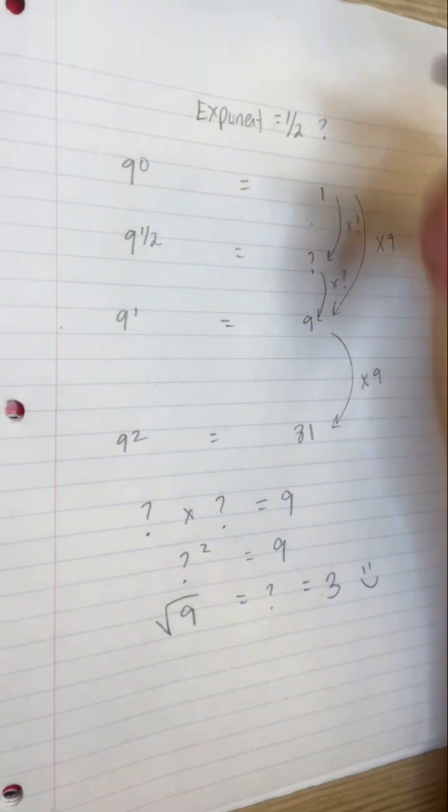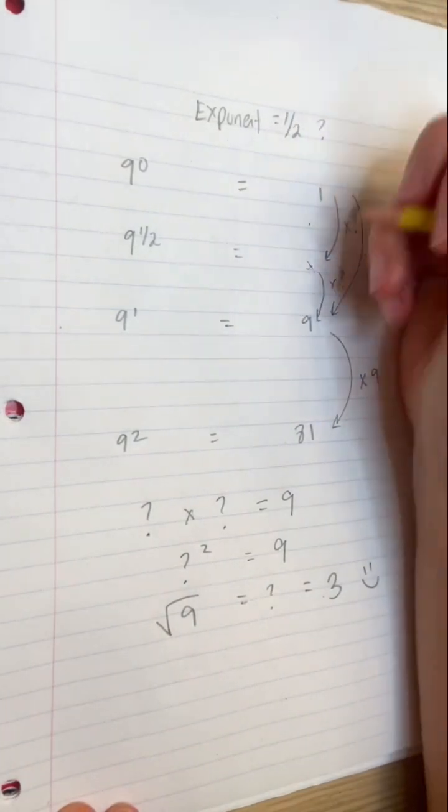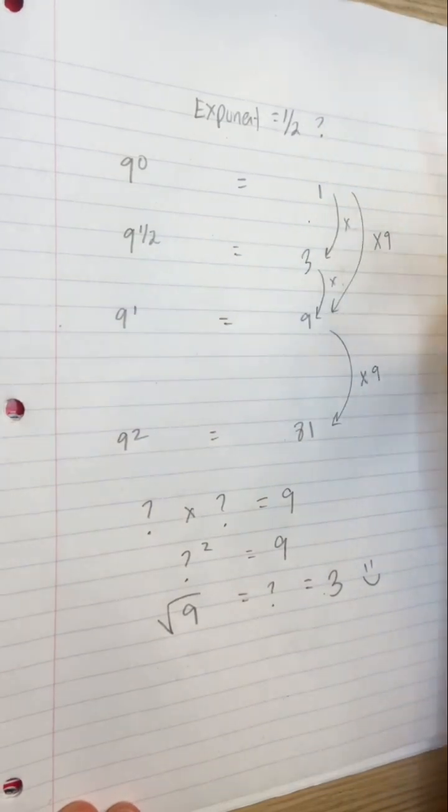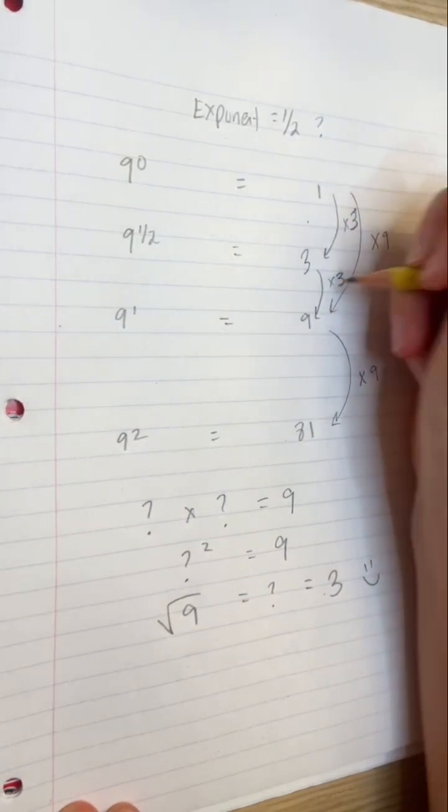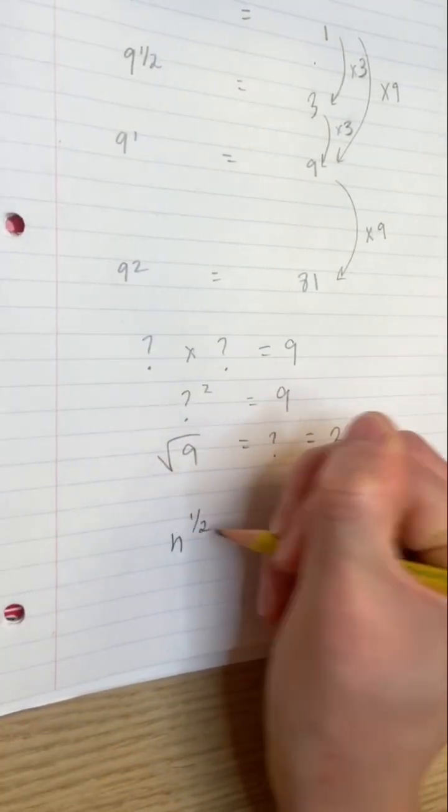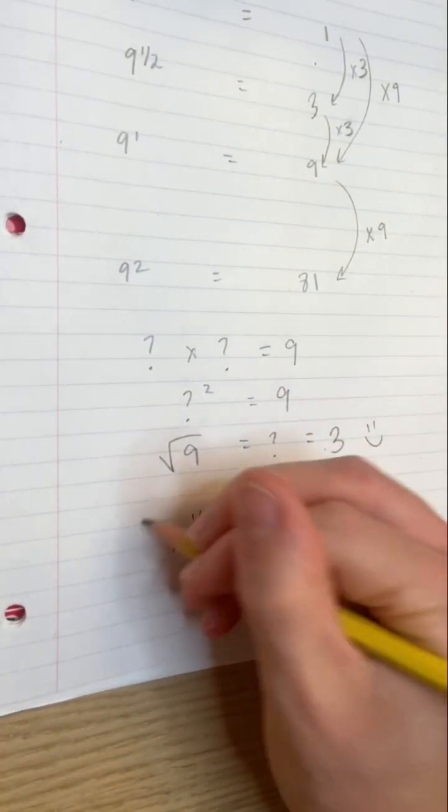9 to the power of 1 half must be 3. 9 to the power of 1 half is the same as square root of 9 because it asks the same question: what times itself is 9? And this is always true. A number to the power of 1 half is the same as the square root of that number.